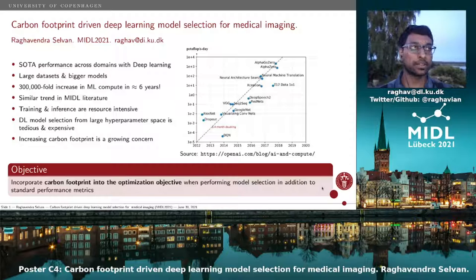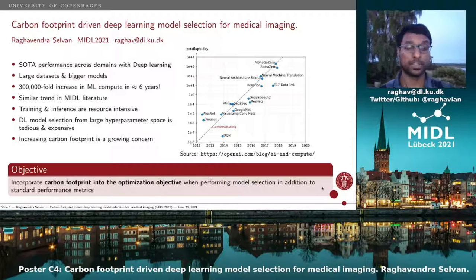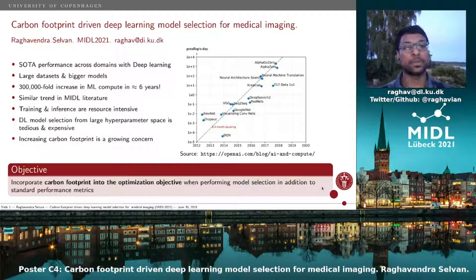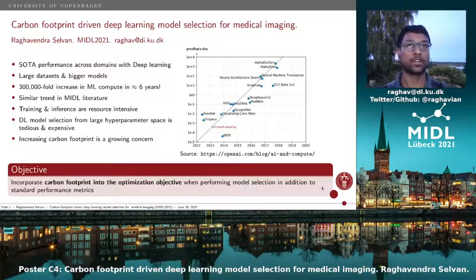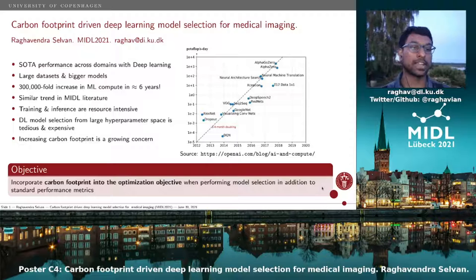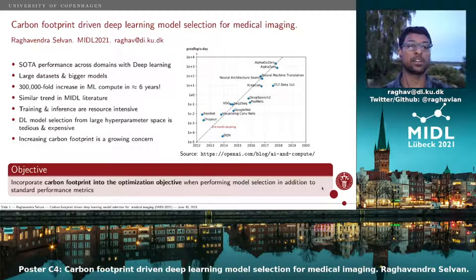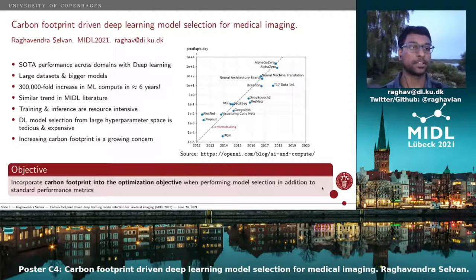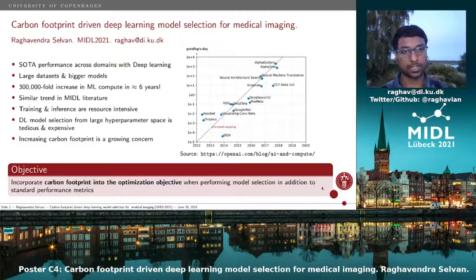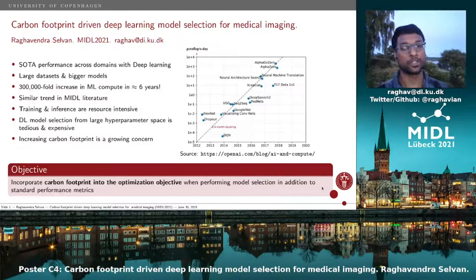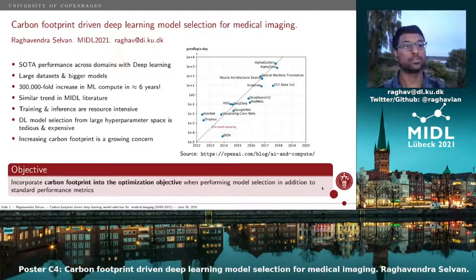Training and model selection are really resource intensive processes. This gets further aggravated when we look at model selection in deep learning models because of the large hyperparameter space. Taking all of this into account, the increasing carbon footprint because of this is also of huge concern.